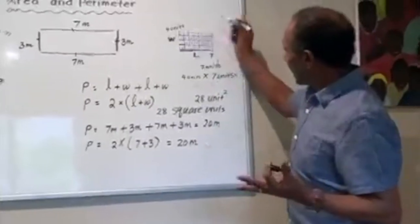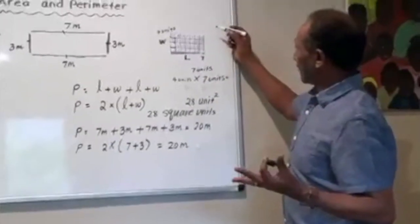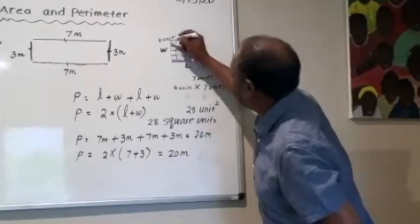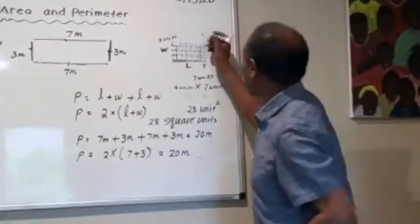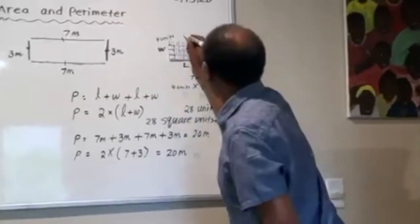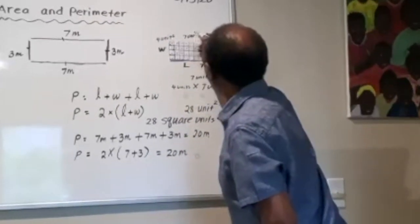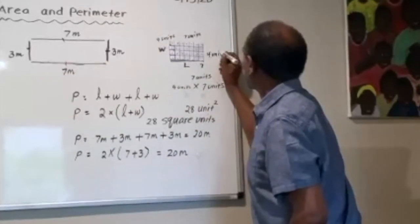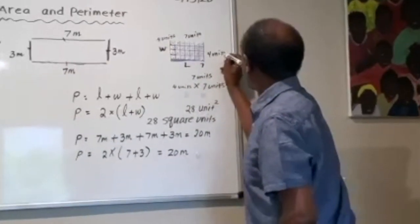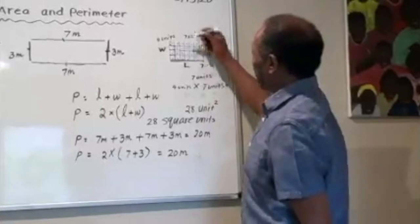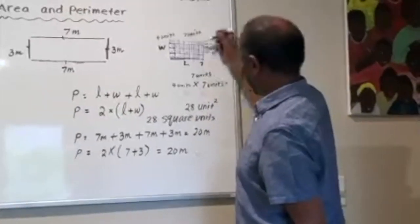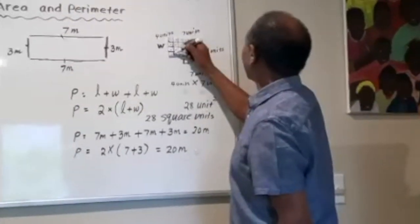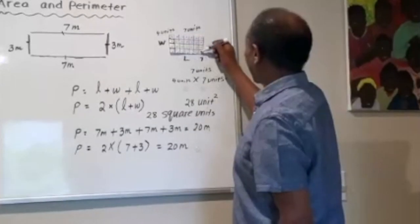Now let's see if we can find the perimeter of the same shape. The perimeter — this is seven units and this is four units. So it's like counting by seven, four times: seven, 14, 21, and 28 units. But wait — that was the area.